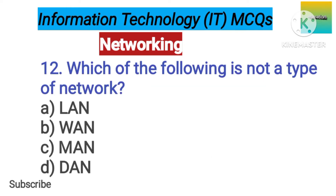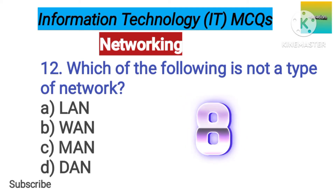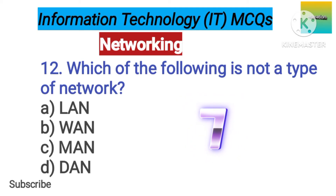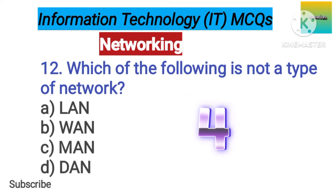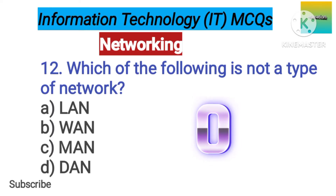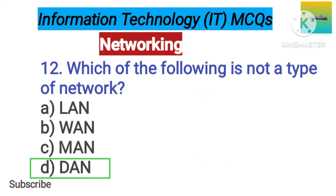Number 12. Which of the following is not a type of network? Option A: LAN. B: WAN. C: MAN. D: DAN. The correct answer is option D, DAN.